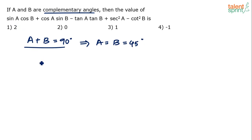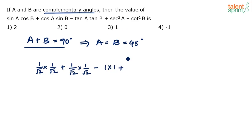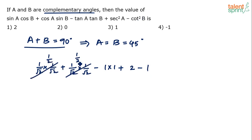Sin45·cos45 is (1/√2)·(1/√2), plus cos45·sin45 is also (1/√2)·(1/√2), minus tan45·tan45 which is 1×1, plus sec²45. Since sec45 = √2, sec²45 = 2, minus cot²45. Since cot45 = 1, cot²45 = 1. Simplifying: 1/2 + 1/2 = 1, and 1 minus 1 gets cancelled.